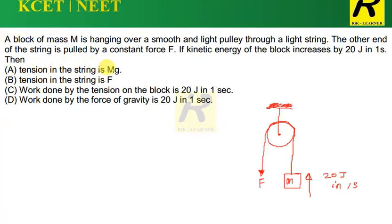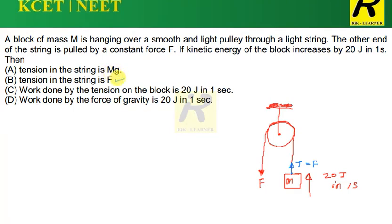Option A says tension in the string is Mg. What is actually happening: the free end of the string is applied with only force F, nothing else. So the tension in the string is exactly equal to the applied force F. The same force appears as tension. So tension is not equal to Mg, rather it is equal to F. Option B says tension in the string is F — this is correctly stated in Option B, and Option A is wrong.